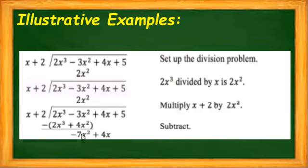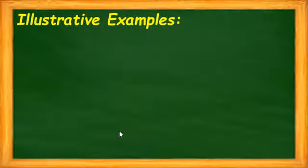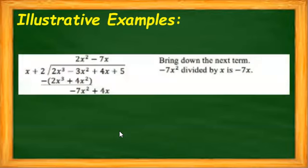Our answer will be negative 7x squared. Remember that we are going to change the sign of our minuend, so it will be negative 3x squared plus negative 4x squared. That's why our answer is negative 7x squared. And then we are going to bring down our next term which is 4x.